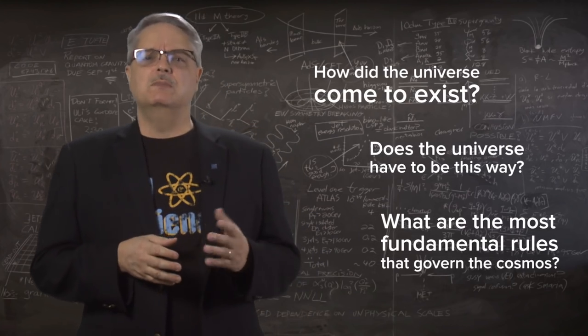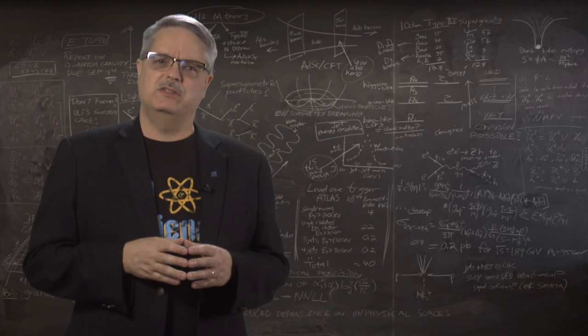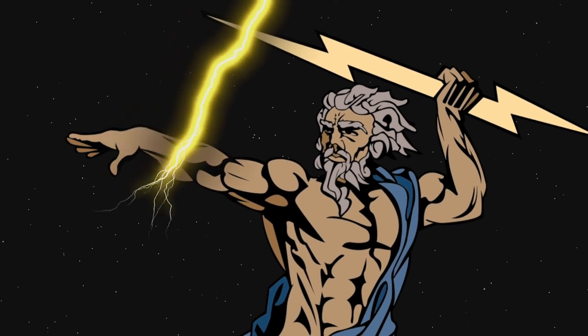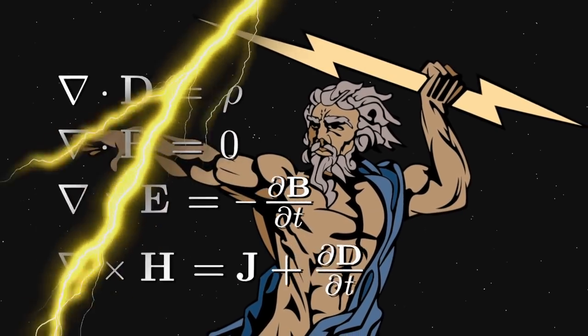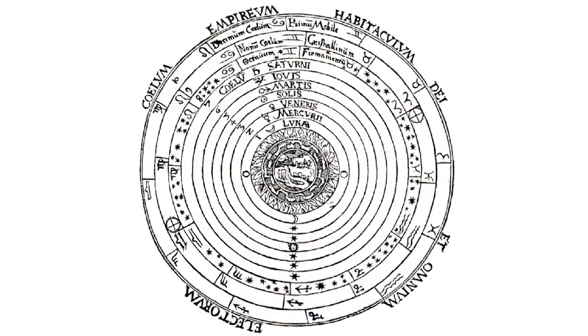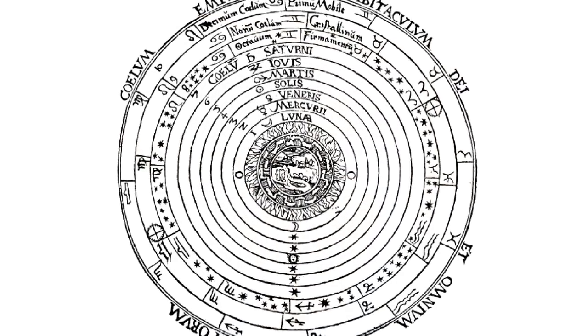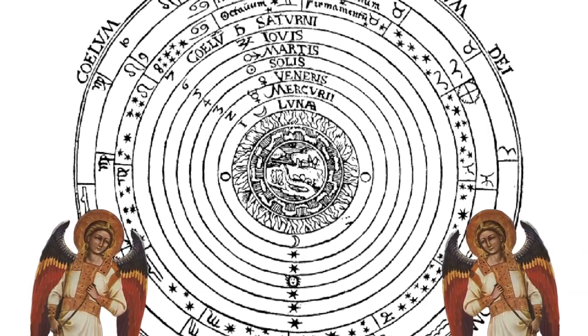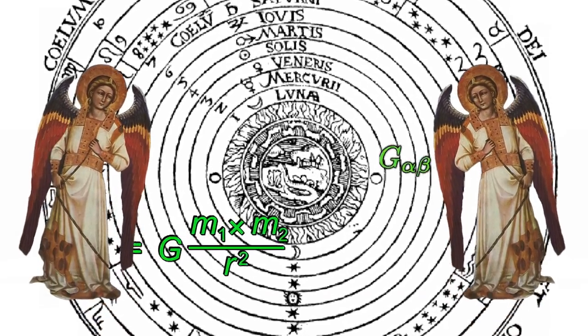Over the years and millennia we have come up with a series of answers, where once we ascribed lightning to Zeus's wrath writ large across the sky, we now talk about the laws of electromagnetism. People once speculated about the motion of the planets invoking crystalline spheres and the beating of angels' wings, but we now know first of Newton's and now Einstein's theory of gravity.